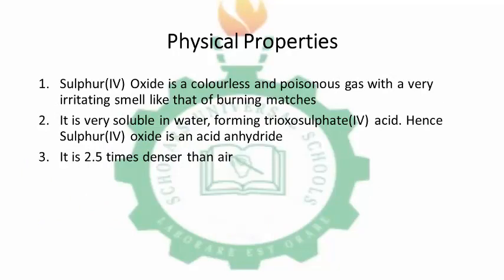Now, physical properties of SO2. SO2 is a colorless and poisonous gas with a very irritating smell, like that of burning matches. It is very soluble in water, forming sulfurous acid H2SO3. SO2 is an acid anhydride — acid anhydrides are compounds that dissolve in water to produce acid, for example CO2 and NO2, and also SO3. SO2 is 2.5 times denser than air, so it can be collected by downward delivery, also known as upward displacement.